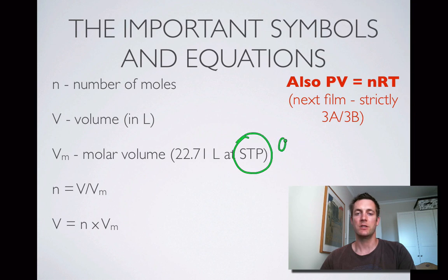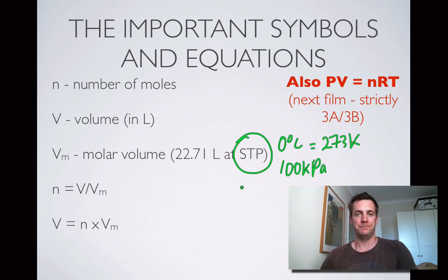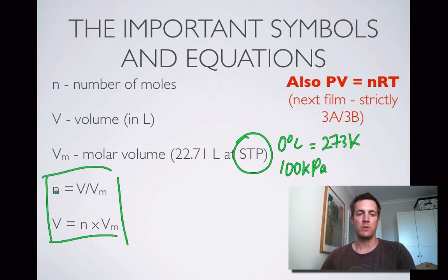STP is given on your data sheet as 0 degrees centigrade and 100 kilopascals, which is the same as 273 Kelvin. The formulas we're going to use: the number of moles of any gas is given by its volume divided by the molar volume (n = V / Vm), and the volume of any gas is given by its number of moles multiplied by the molar volume (V = n × Vm).